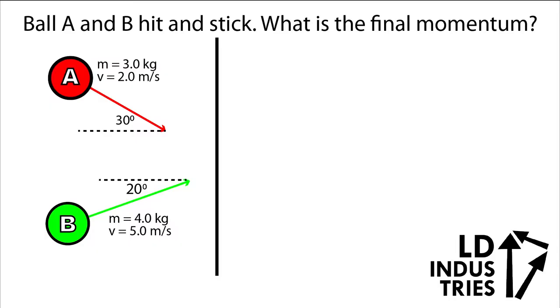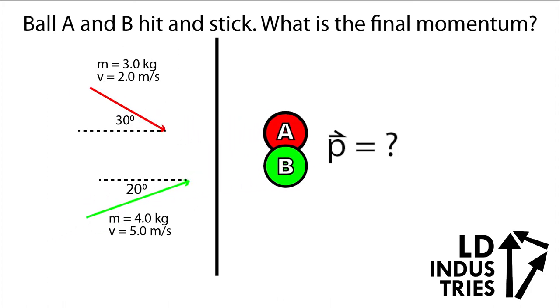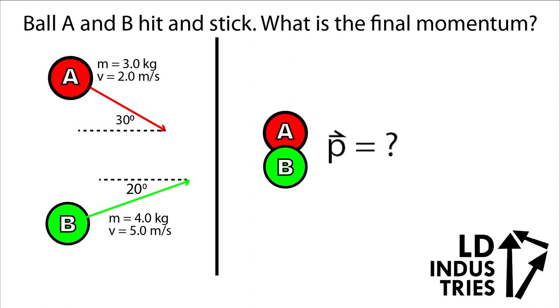In the first problem, we have two objects that hit and stick together. We want to know their final momentum. We know the mass and velocity of each object as well as the angle that they strike at. There are a few steps we'll use to solve this problem.